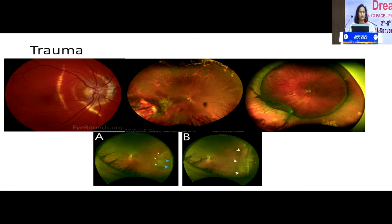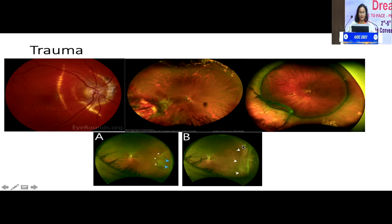A very important role is in patients who have sustained trauma. Trauma can show findings ranging from posterior to peripheral. We can see choroidal rupture — a circumferential choroidal rupture. These are findings of retinitis sclopetaria, which can be associated with high-speed velocity injuries. This is anterior vitreous base avulsion, very pathognomonic of trauma. We can also see dialysis not associated with SRF, so laser retinopexy has been done.